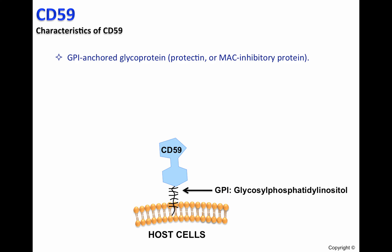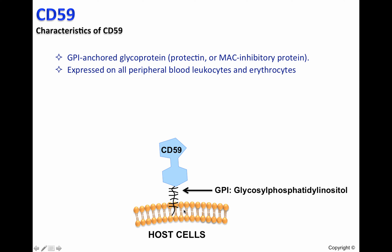CD59 is a GPI-anchored glycoprotein, also called protectin or MAC-inhibitory protein. The GPI, or glycosylphosphatidylinositol, will keep CD59 attached to the cell surface of host cells.